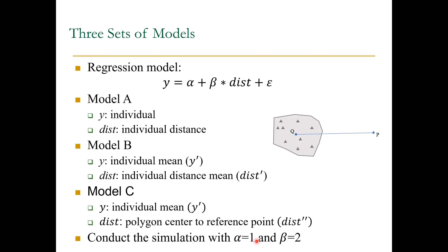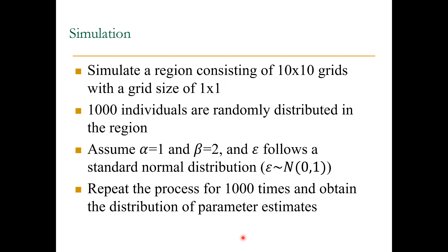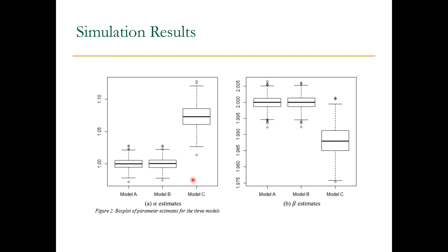Model C is very common in real-world applications because we don't know where people are, but we know the census tract and measure the distance from it. Then we conduct a simulation. We simulate a region consisting of 10 by 10 grids, with a single grid size of 1 by 1. We assume there are a thousand individuals randomly distributed in the region.